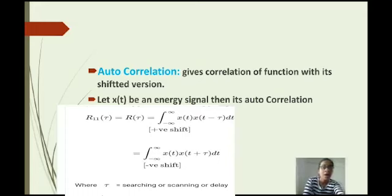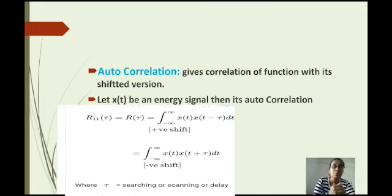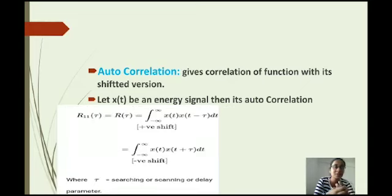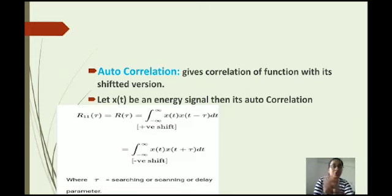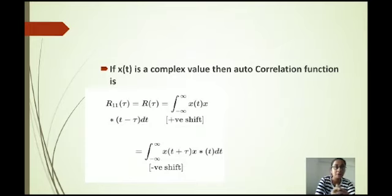Let x(t) be an energy signal. Its autocorrelation is R11 equal to the integral from minus infinity to infinity of x(t) · x(t minus tau) dt in case of positive shift, and in case of negative shift it is the integral from minus infinity to infinity of x(t) · x(t plus tau) dt, where tau is the scanning or delay parameter.